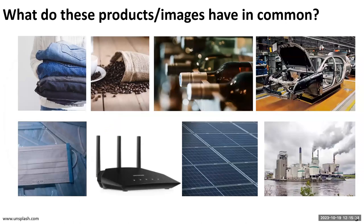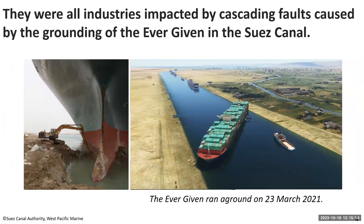Another example: consider these eight products — what do they have in common? They were all industries impacted by cascading faults caused by the grounding of the Ever Given. In 2021, the Ever Given ran aground and blocked the Suez Canal for about 11 days. About 12% of the world's shipping cargo travels through the Suez Canal, and during the blockage, ships had to take a three-week detour around the Horn of Africa, impacting about $9 billion worth of goods per day. One of the industries impacted was actually COVID response — several hospitals had to change their COVID response strategy due to delays in receiving personal protective equipment.